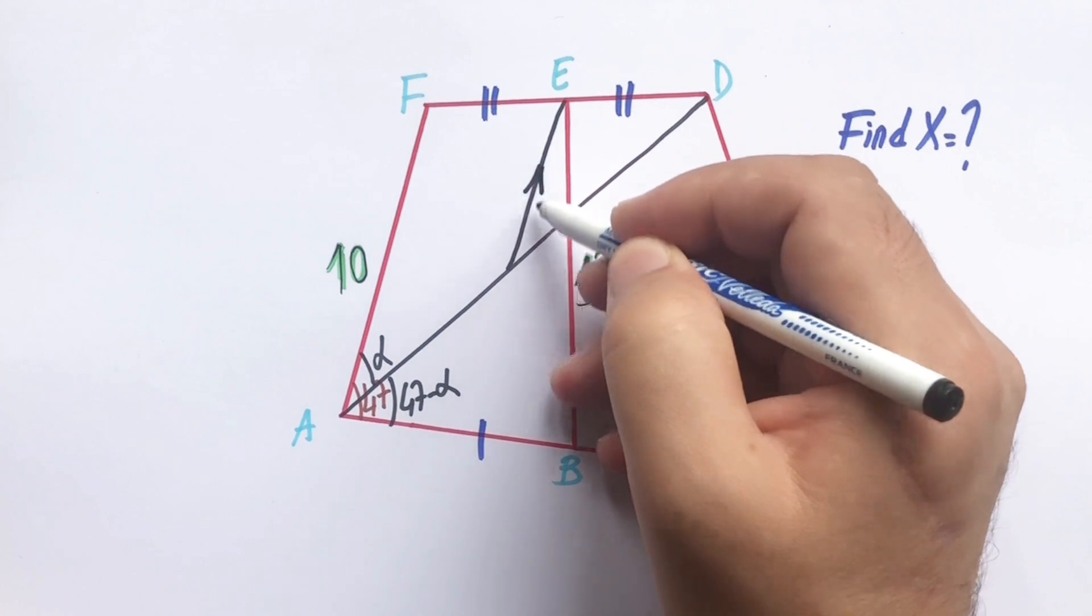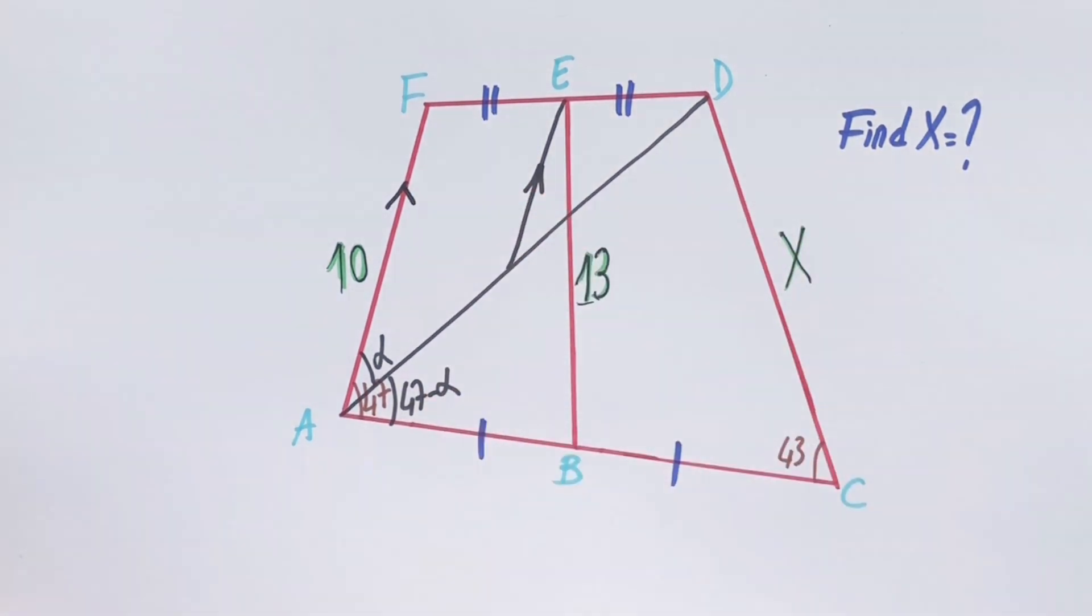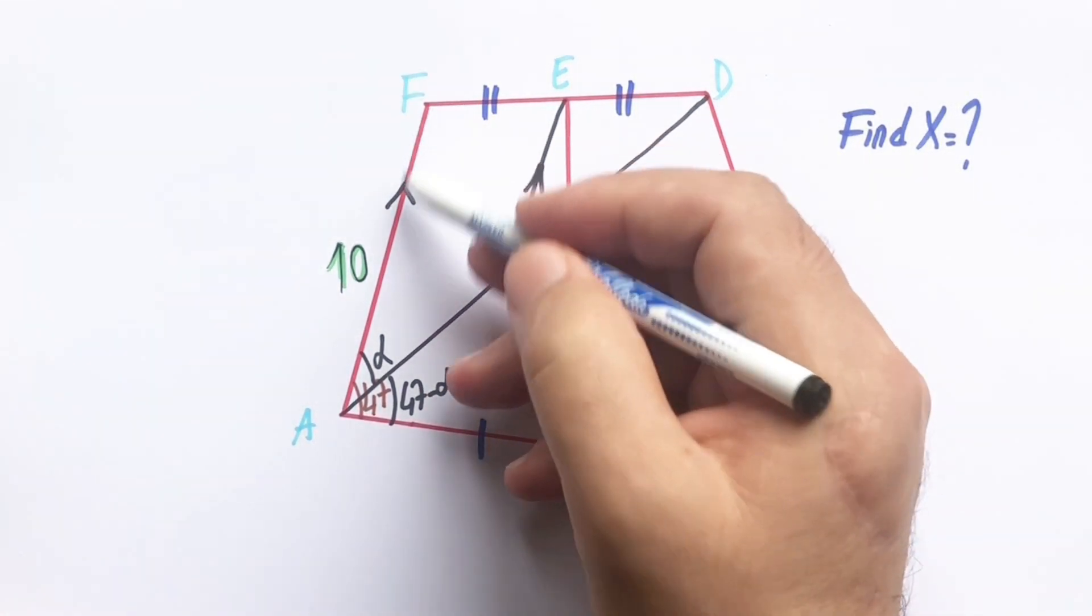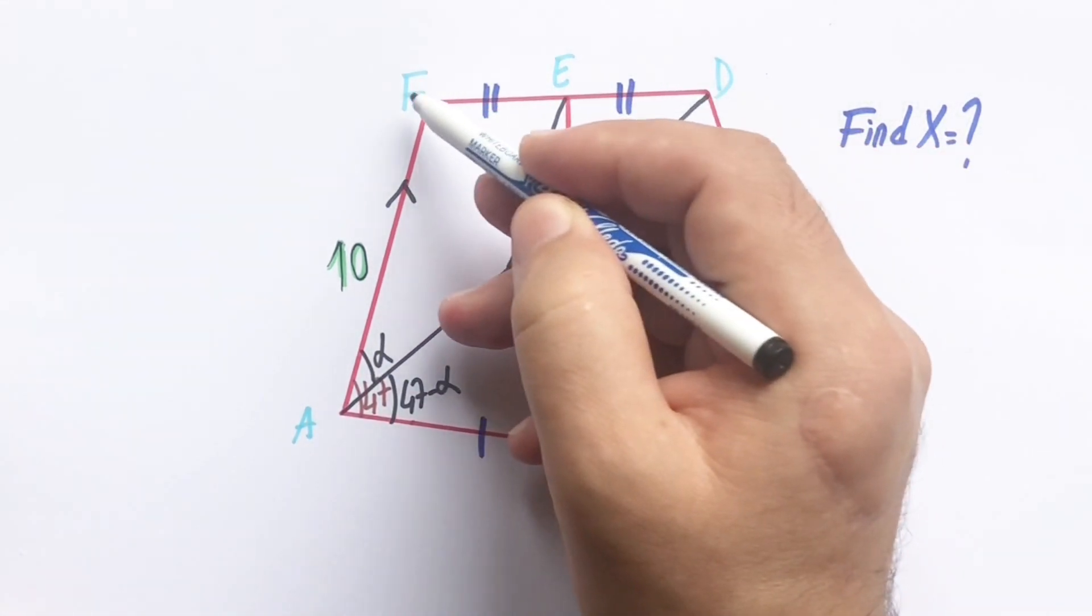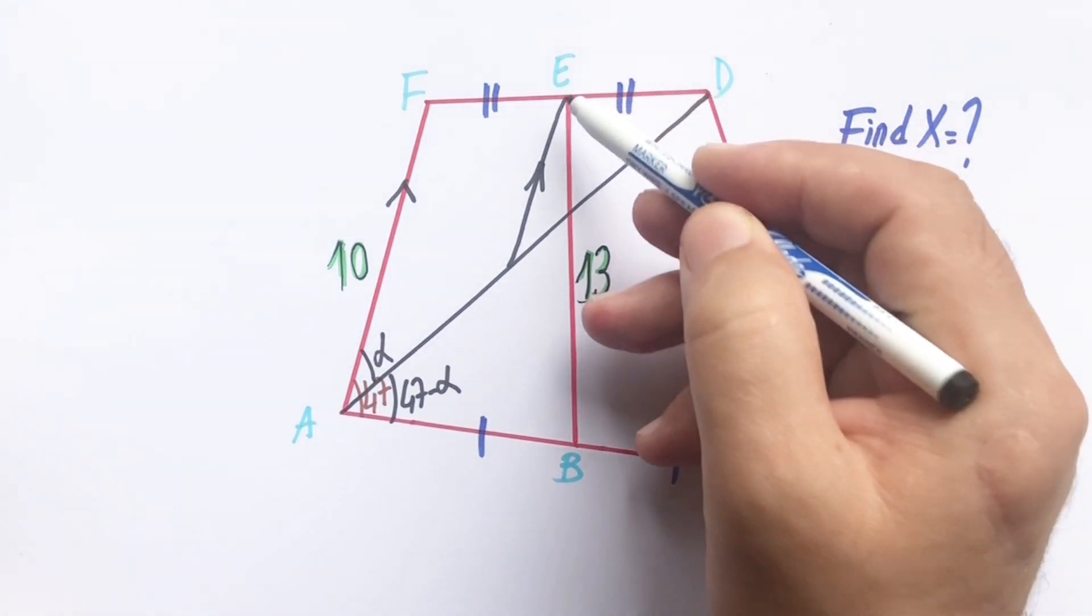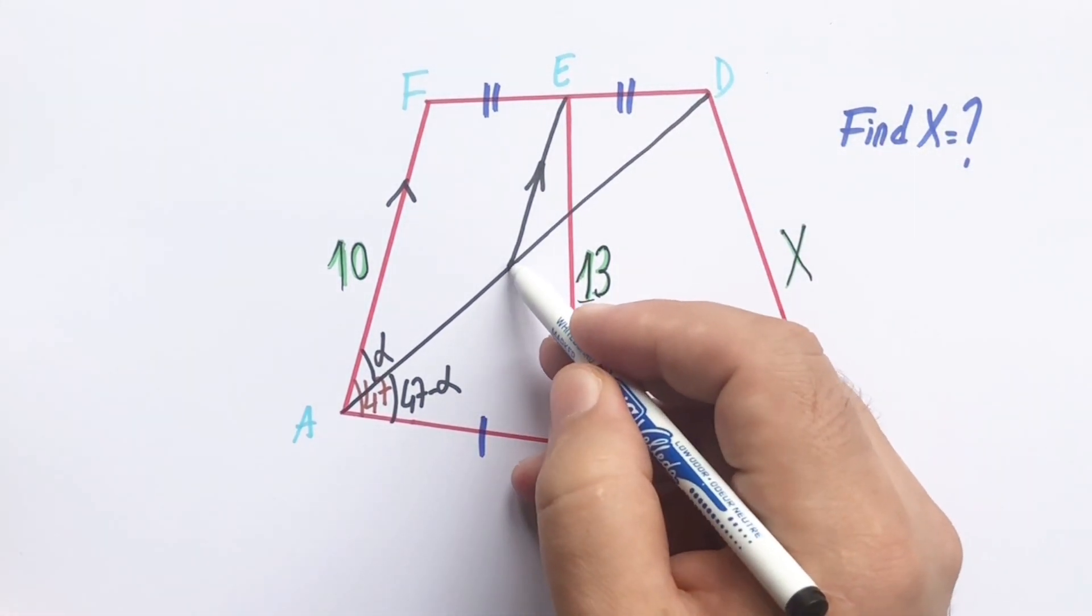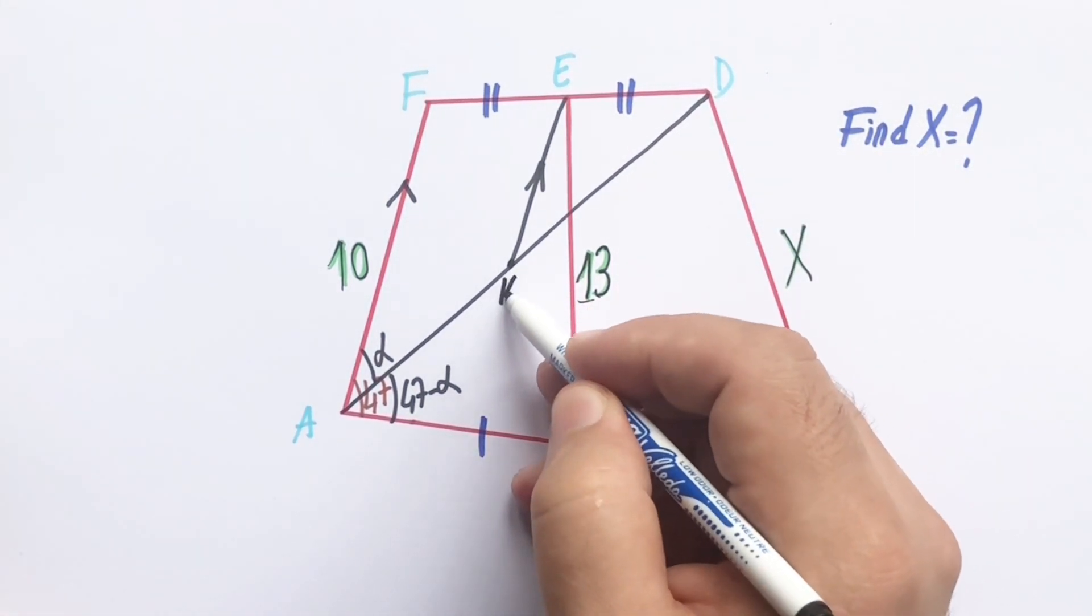Let's draw a parallel line to AF. If you notice, this triangle and this triangle are similar. Let's call here K point.